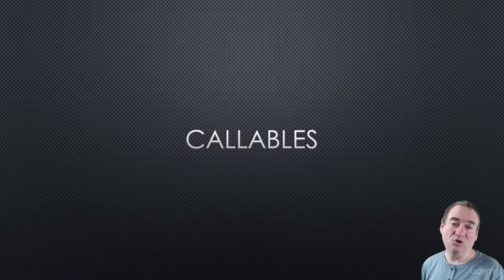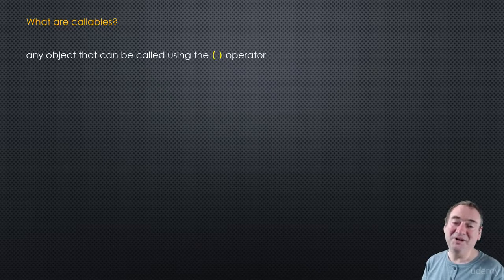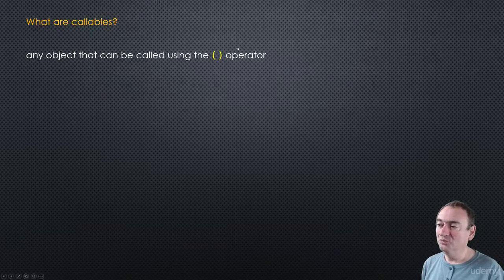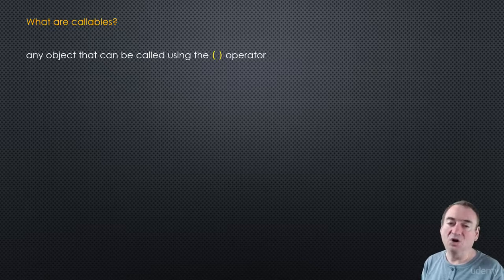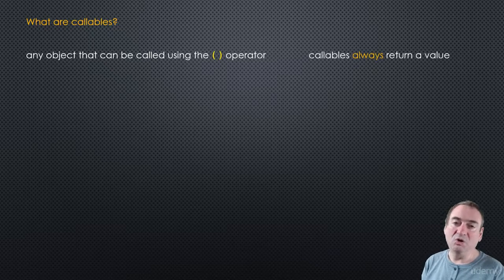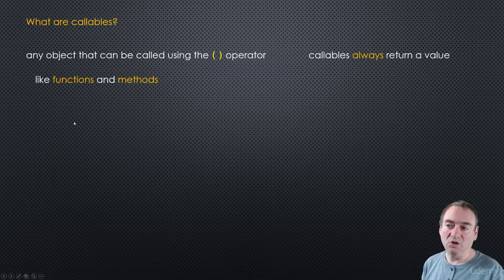In this video we're going to look at callables - just a little bit of terminology. A callable is any object that can be called using the parentheses operator. You take an object, use parentheses after the object name, potentially with parameters inside or without, and it does something - it makes a call. Callables will always return a value; the value could be none, but it will always return a value. Things like functions and methods are callables.